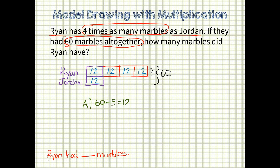60 divided by 5 equals 12. Now I will write 12 in each unit bar. Focusing again on what the problem is asking us to do, we need to find out how many marbles Ryan had. So we will now multiply 12 times the four pieces Ryan had, and 12 times 4 equals 48. Ryan had 48 marbles.